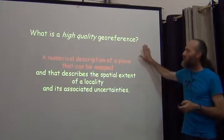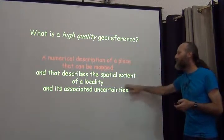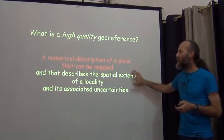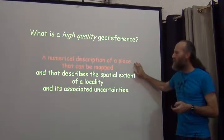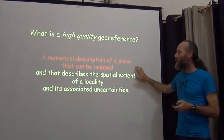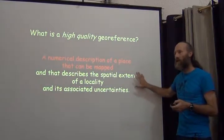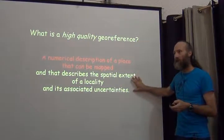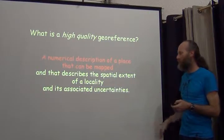A high-quality georeference is one that allows us to not only put the dots on the map, but also to say something about the uncertainties associated with it, as if it were any kind of measurement.